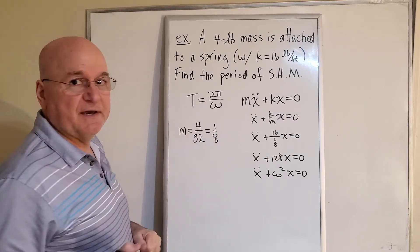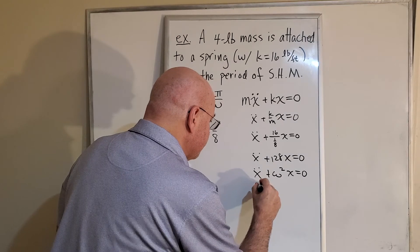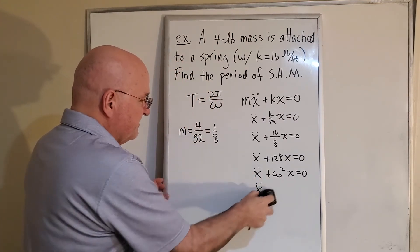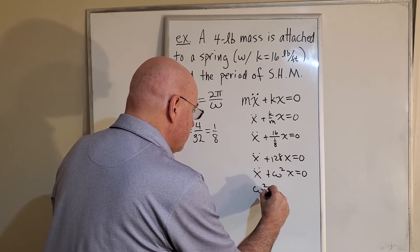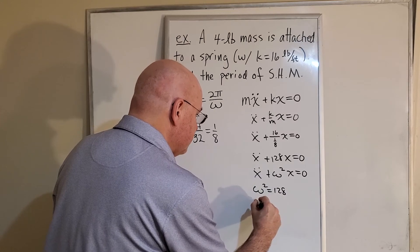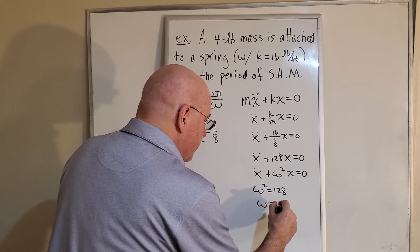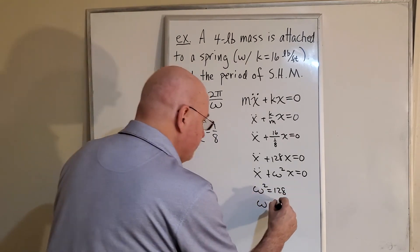All I need to say is that ω² is 128, which means omega is going to be—64 times 2, the square root of that would be 8—so 8√2. We're about done. All we have to do is T = 2π over 8√2.